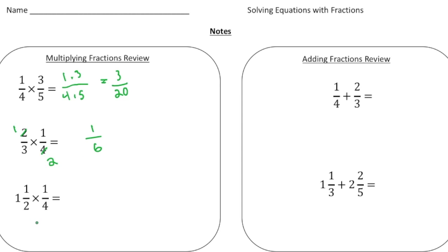This one, we have a mixed number, so we need to make it improper. One and a half can be written as three-halves. The way you do that is the denominator times the whole number — two times one is two — and then you add the one, and you put it all over the denominator. So it's three-halves times one-fourth. Three times one is three, and two times four is eight. When you multiply fractions, when in doubt, just multiply the numerators and then multiply the denominators and make a fraction with those products.